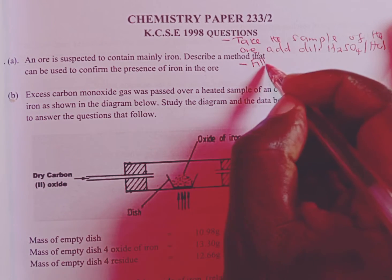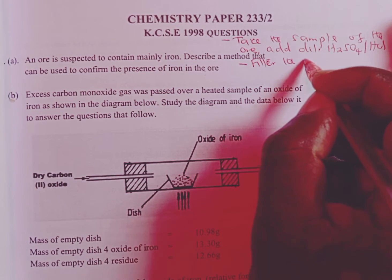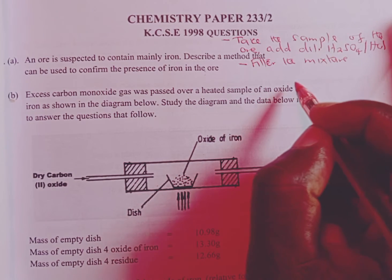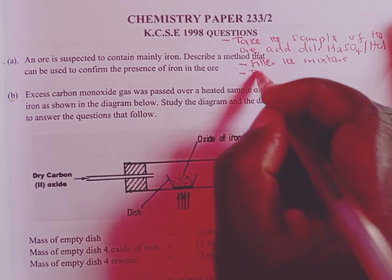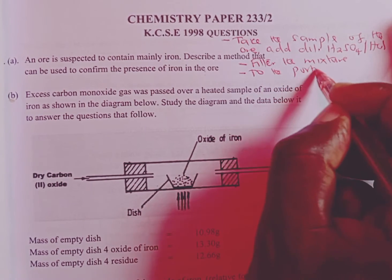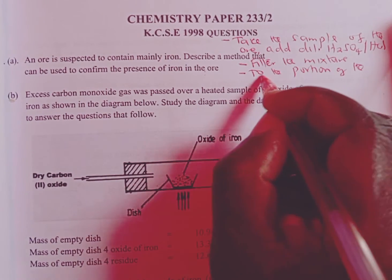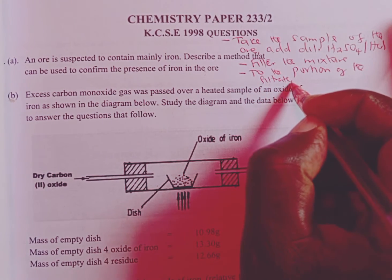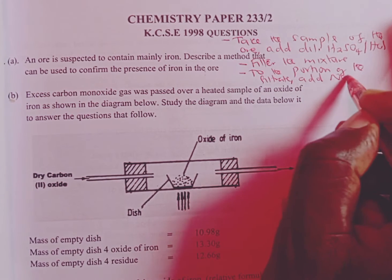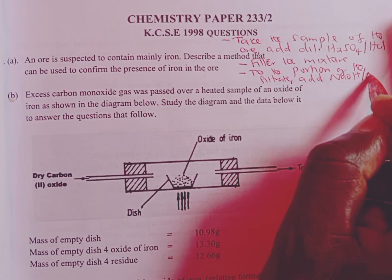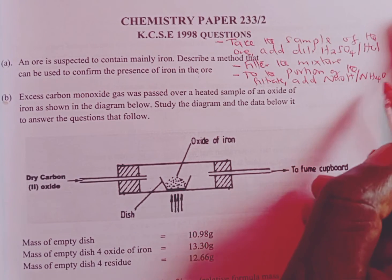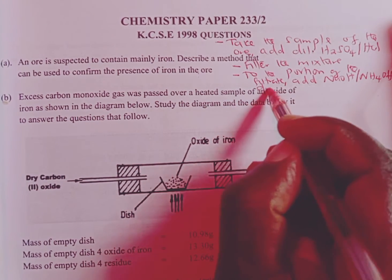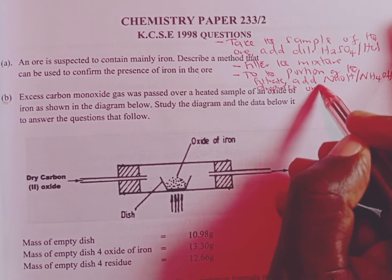Then number two, we filter the mixture. After filtering the mixture, we are going to obtain the filtrate. So to the portion of the filtrate, we add either sodium hydroxide or we can add aqueous ammonia, which is simply ammonium hydroxide. After that, we simply add dropwise until excess.